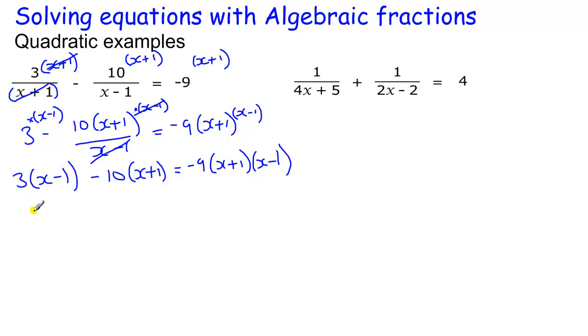So multiplying that out, we get 3x minus 3. Be careful with the negatives here, minus 10 lots of x minus 10 lots of 1, which is 10. Here, my x plus 1 times x minus 1, I can apply all this out, but you might know that this is the difference of two squares, which saves you a little bit of effort. That's just the same as x squared minus this number squared, which is just 1.